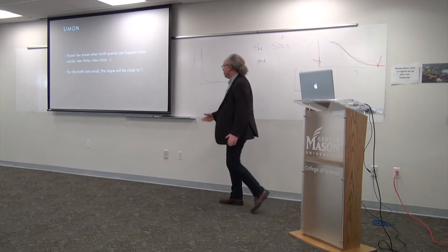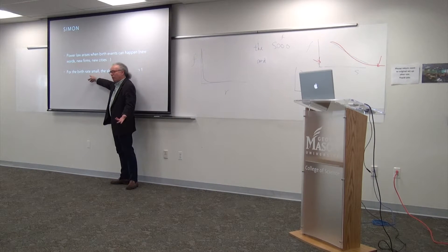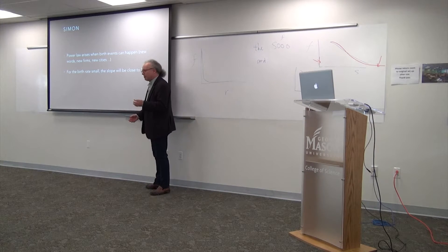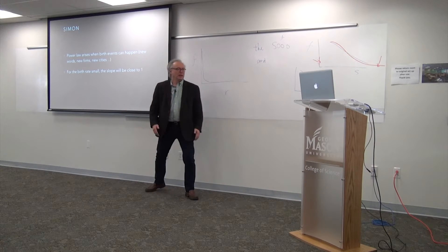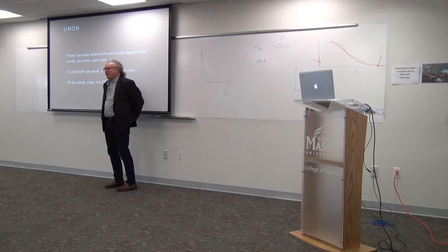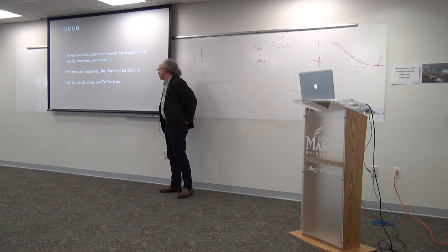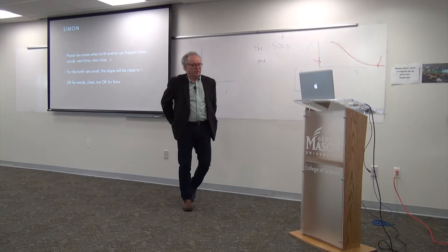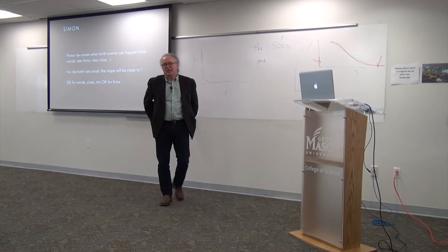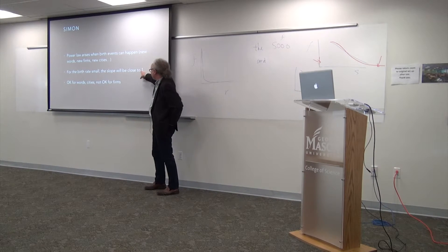It was really left to Herbert Simon to write down the first theory that gives us the right answer: the power law. Simon says power laws happen when we get birth events — new words forming, new firms, new cities. When new things happen and start out very small and then grow, that's what gives us the power law. The birth process cuts out stuff at the low end of the log-normal and gives you the right power law. As long as the birth rate is small, the slope will be very close to minus one. For cities this works: Phoenix was very tiny in the 19th century, comes along and grows. But the trouble is this theory doesn't work very well for firms.